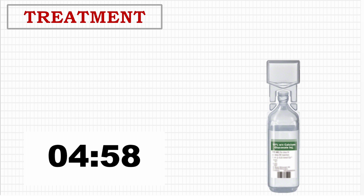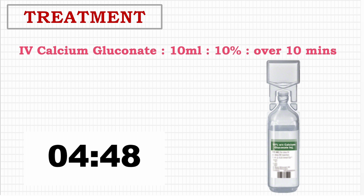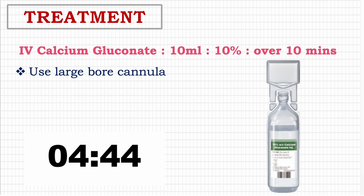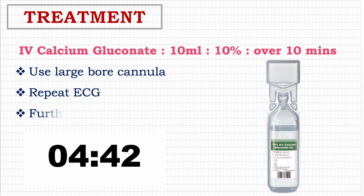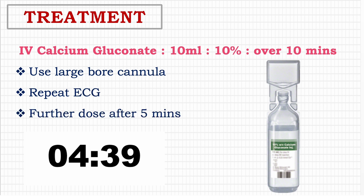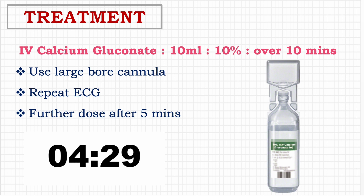Now let's see the treatment for hyperkalemia. The first-line medication in severe cardiac arrhythmia is calcium gluconate. Calcium gluconate is available as 10 ml of 10%, which can be given via large-bore cannula over 10 minutes. Monitor ECG and repeat the dose after 5 minutes. Two important notes: first, it may cause extravasation leading to tissue necrosis; second, it should not be administered with bicarbonate as it may cause precipitation of calcium carbonate.